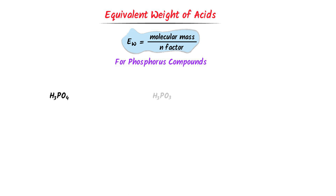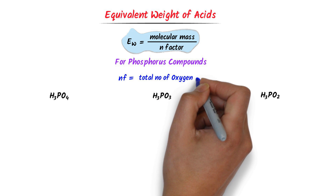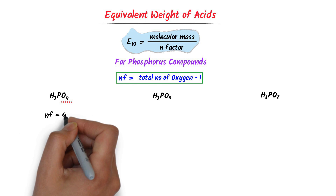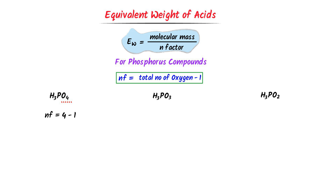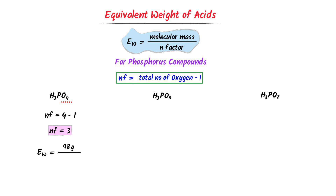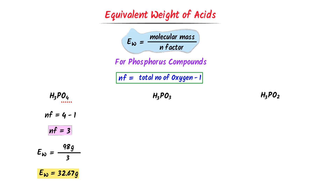Now consider phosphorus compounds. To find the N factor of phosphorus compounds, I use the formula: N factor is equal to number of oxygen atoms minus 1. We can see that there are 4 oxygen atoms. So N factor is equal to 4 minus 1, which gives N factor equal to 3. Its equivalent weight is equal to the molecular mass of this compound, which is 98 gram, upon the N factor which is 3. After calculation, I get 32.67 gram. So the equivalent weight of this compound is 32.67 gram.